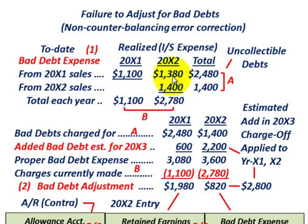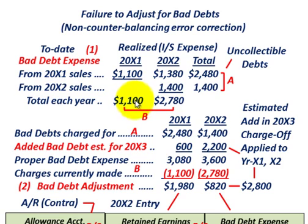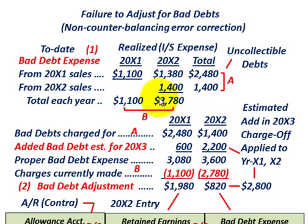From the 20x2 sales, in year 20x2 they have $1,400 in bad debt realized, so the total for 20x2 sales is $1,400. Now, when making our adjustments we need to know the total for each year: for 20x1 we simply have $1,100 in bad debt expense, and for 20x2 from sales made in 20x1 and 20x2 combined we have $2,780. Determining these year totals is a key item when making error corrections.